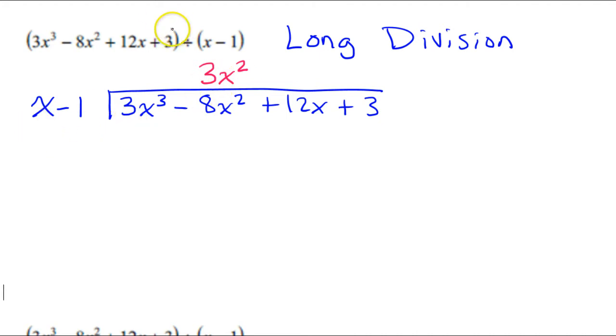So once you have that up there, what you do is the distributive property. You take this, and you multiply it back by each one of these terms, and you write it underneath. So I'm going to have 3x squared times x, of course, is the 3x to the third power as we planned. But we also have 3x squared times negative 1. That will make negative 3x squared. So I'm going to draw a line.